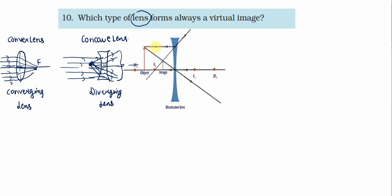Ek example ki baat karayin — this is our concave lens, and here haara object rakha hain. Ek ray of light jo patali thi, this gets diverged and appears to come from the focus. Ek light ray humari pole se pass ho rahi hain. Agar koi observer dekh raha hain, observer ko lagega object wahan per hain jahan pe image intersect kari hain. So this is the image, and this is always virtual. So the answer is concave lens.